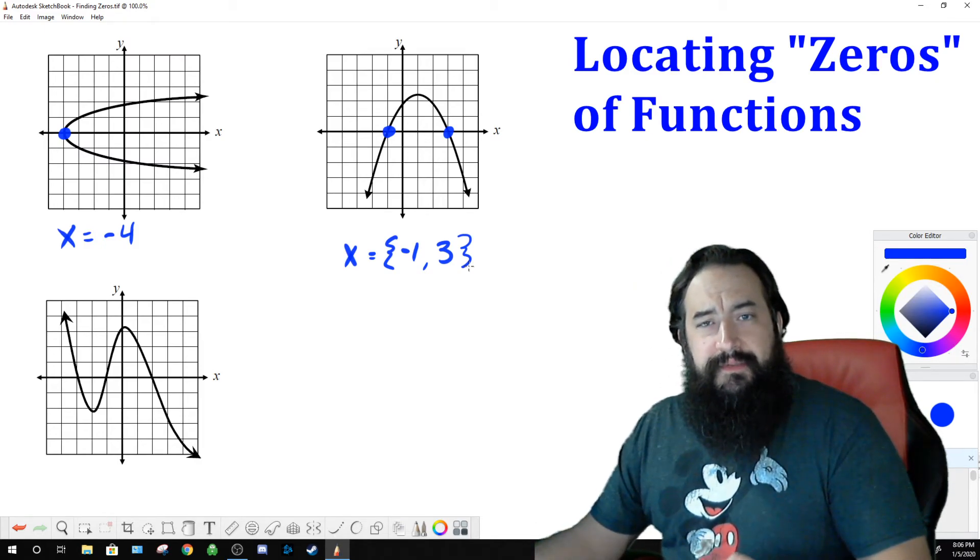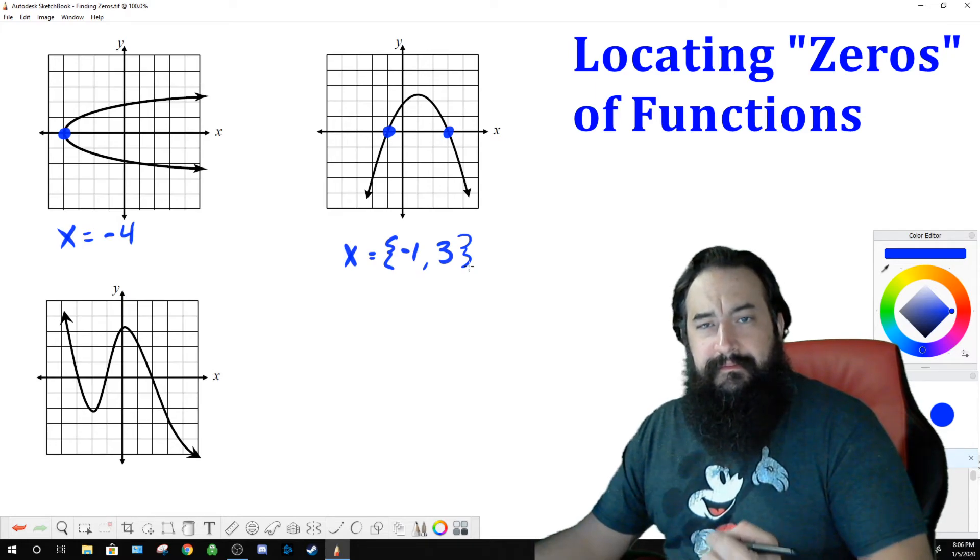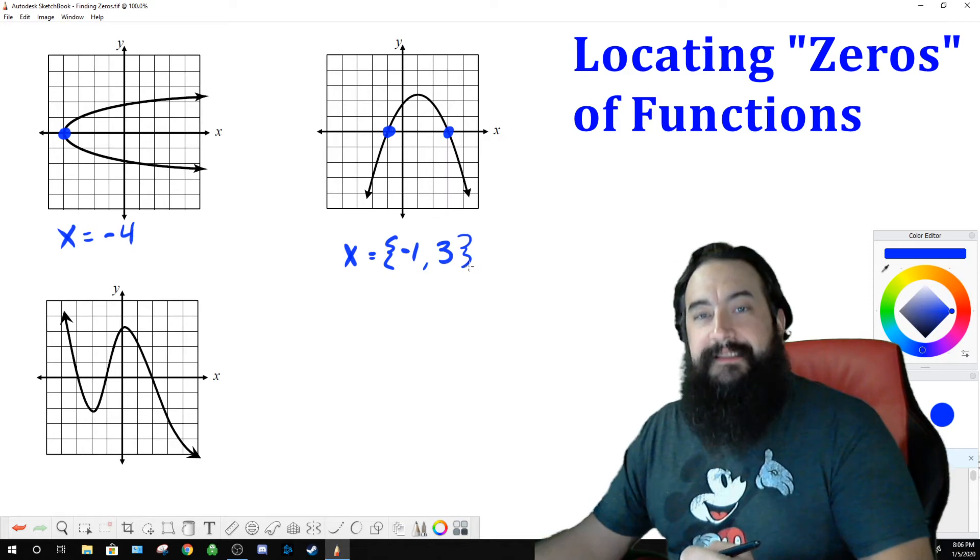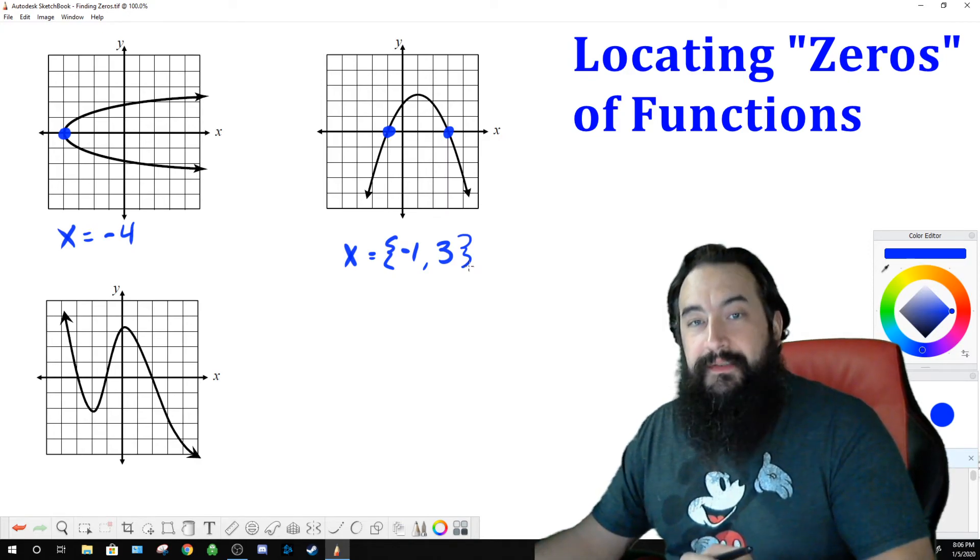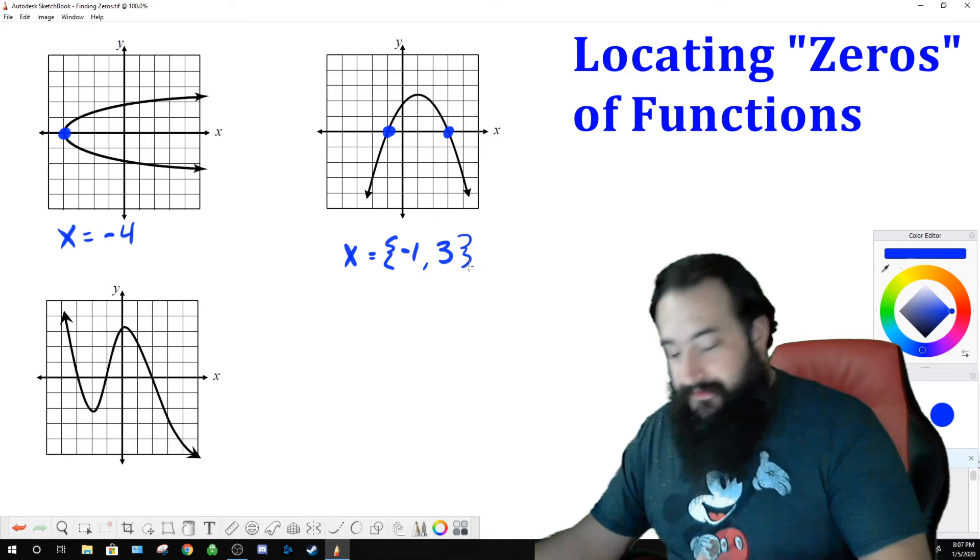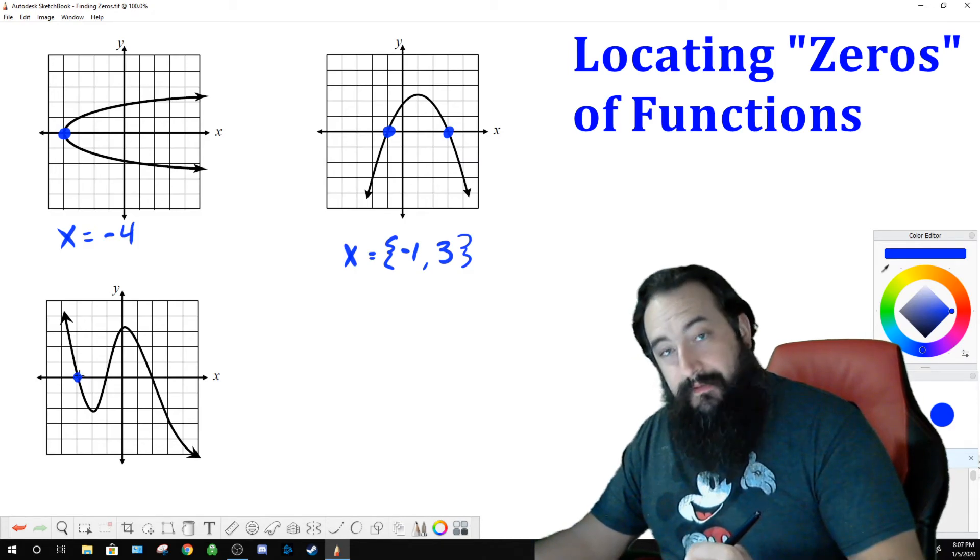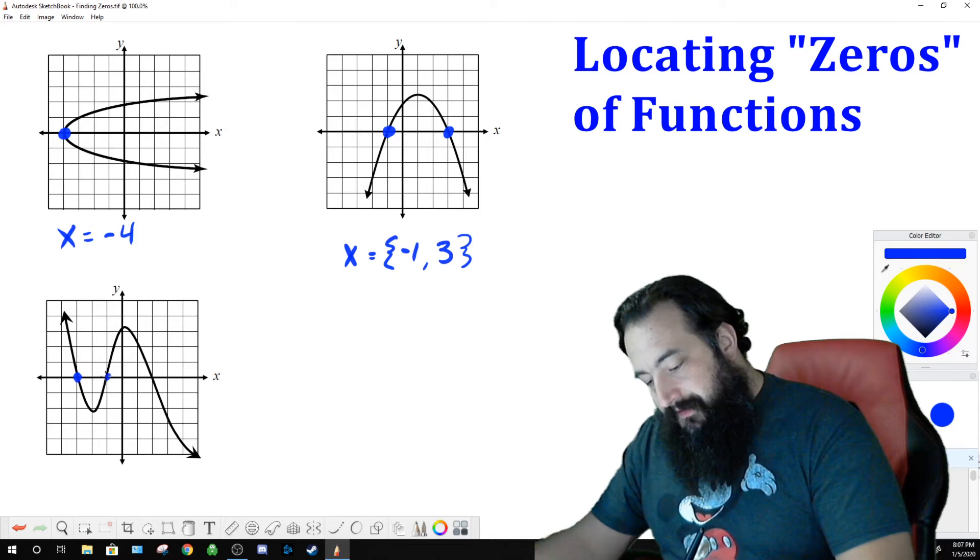So we want to find the zeros here of this function. Look on the graph. Locate where it's crossing the x-axis. Record the x values there, and those are the zeros. Simple. So here's one location where the graph crosses the x-axis. There's another, and there is another.